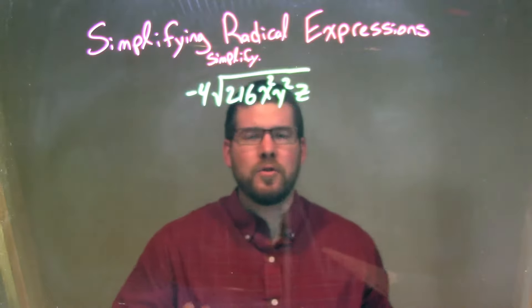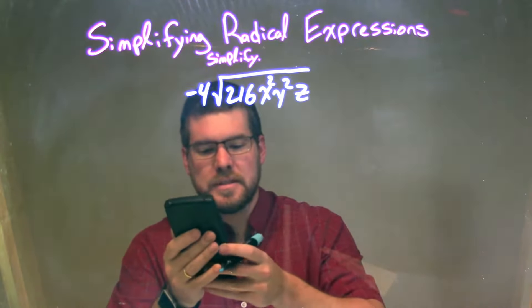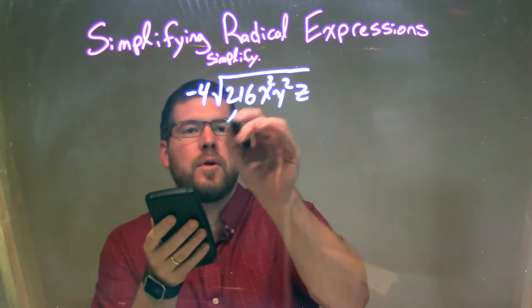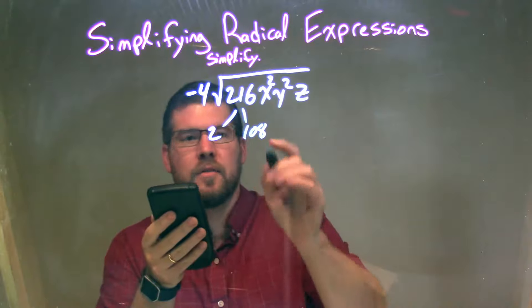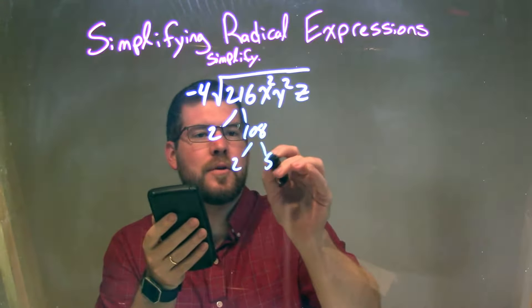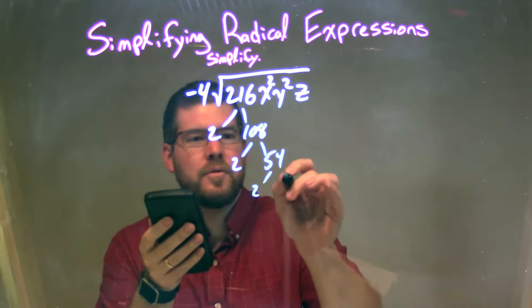Well, what I want to do is break this down. 216, I know it's divisible by 2, so 216 divided by 2 comes out to be 108. So 2 times 108. 108 divided by 2 comes out to be 54, so 2 times 54. 54 divided by 2 is 27, so we have 2 times 27.